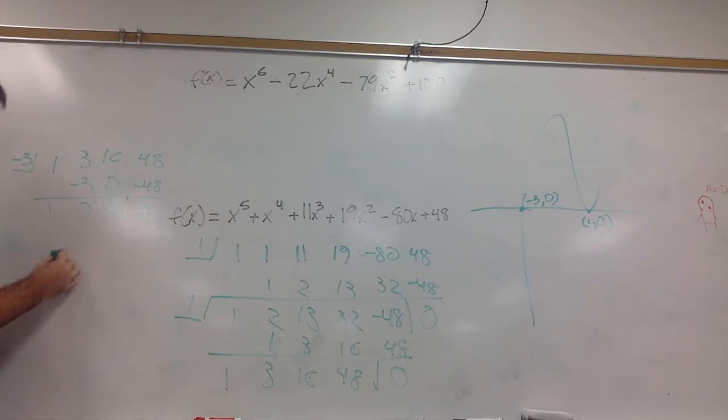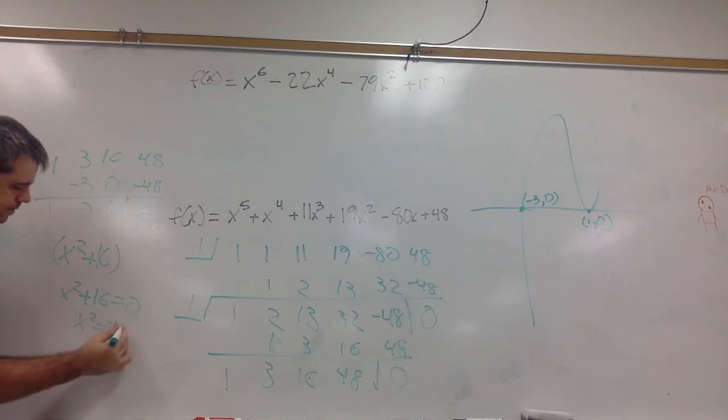So that means I have x squared plus 16 as my remaining polynomial. Well, I can set that equal to 0. So this is going to be plus or minus 4i.